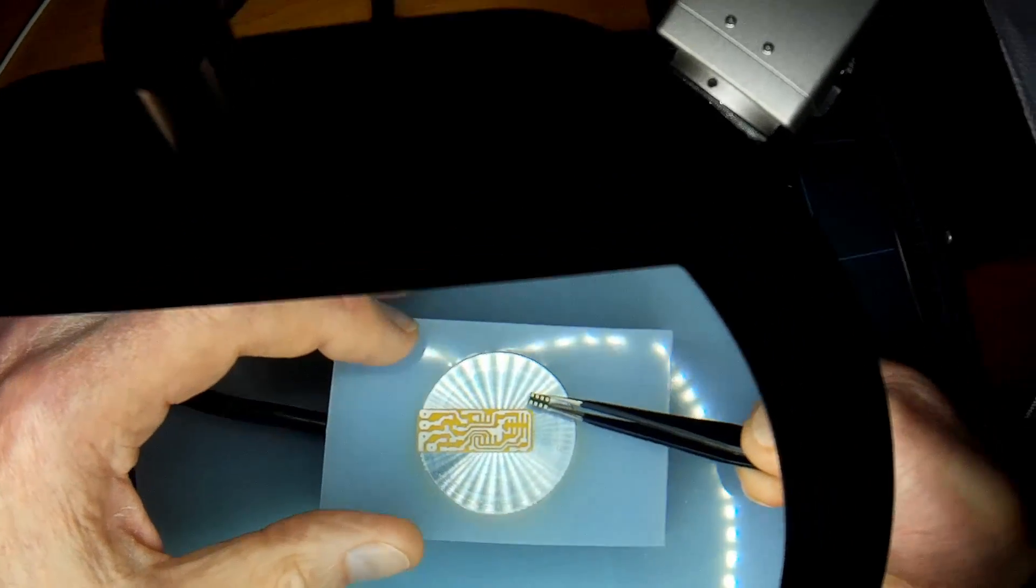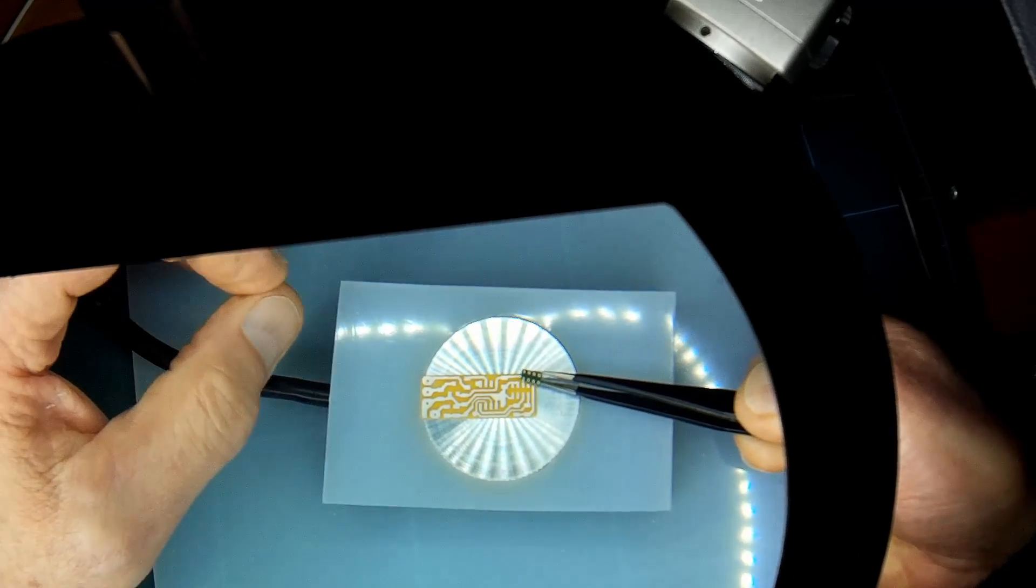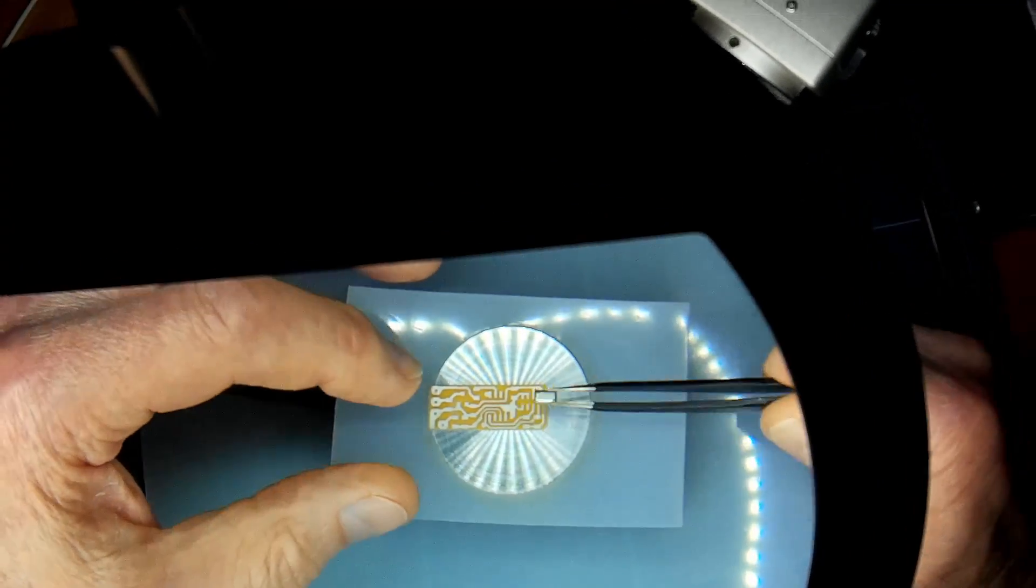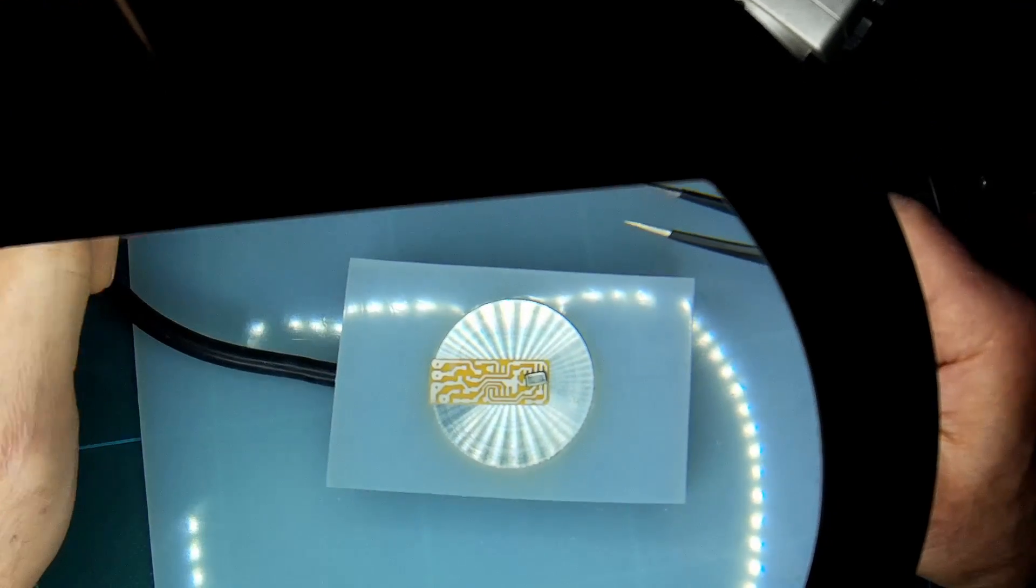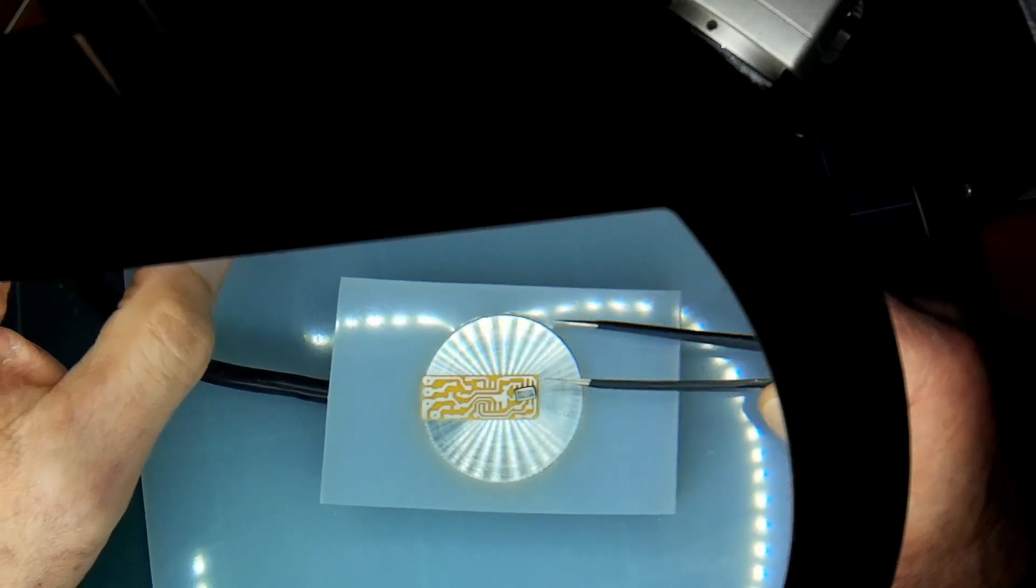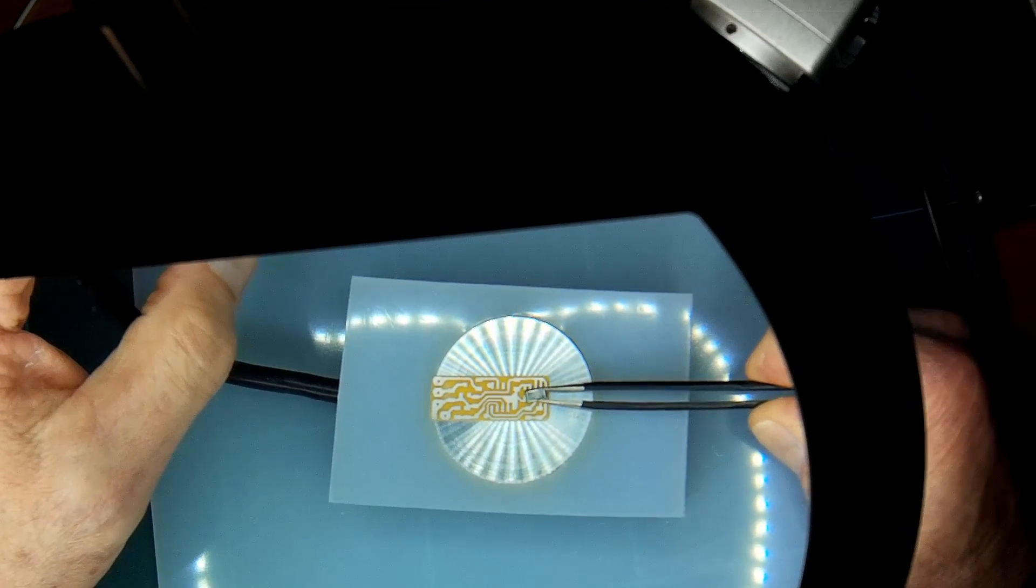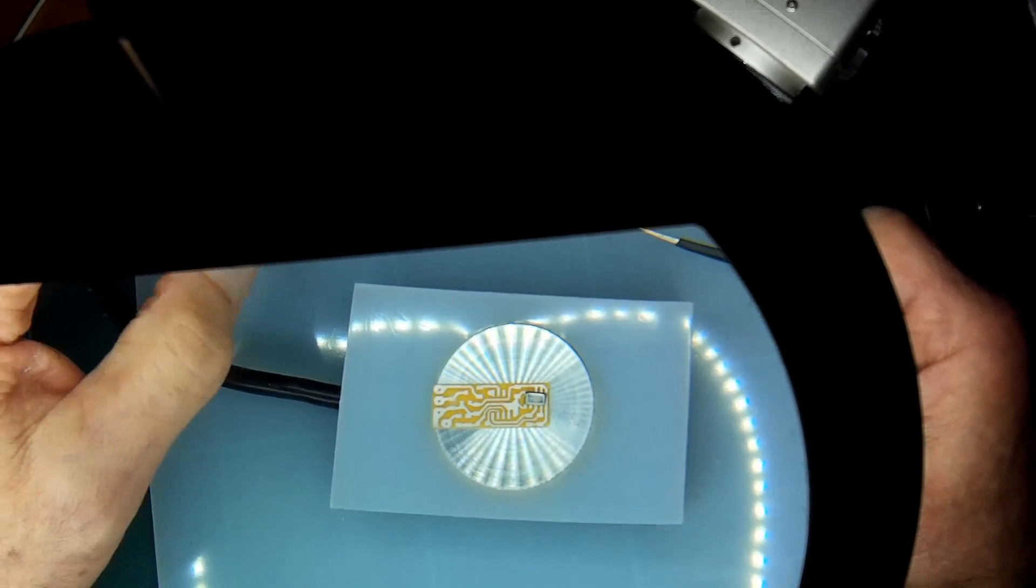We have to get the paste onto the board to be between the board and the sensor and then apply heat to reflow it. So the plan is to use the hot plate to do the preheat section up to about 150 degrees centigrade and then use a hot air gun to finish the job off.